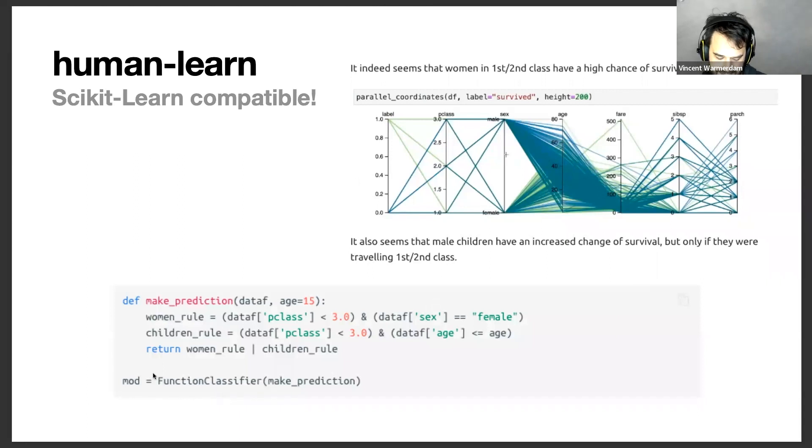And then human learn offers this thing called a function classifier that can take any Python function and turn that into a scikit-learn component, basically. One that's compatible for grid search, which means that all these keyword arguments that you find in here are also something you can grid search over.